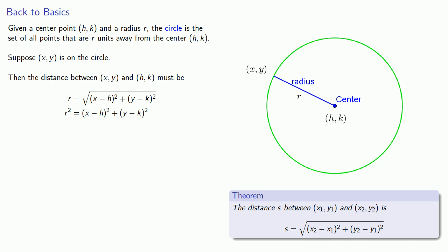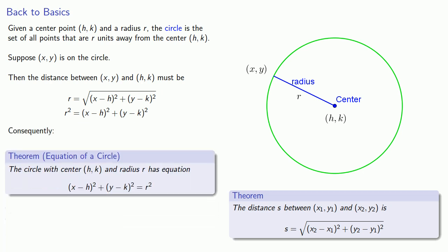And putting everything together, this tells us the following theorem: The circle with center (h, k) and radius r has the equation (x - h)² + (y - k)² = r².